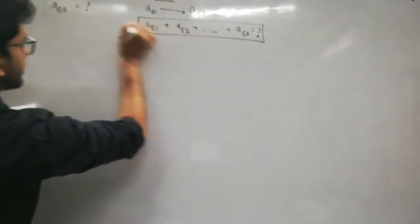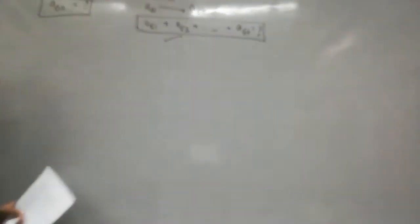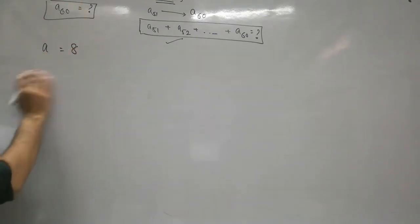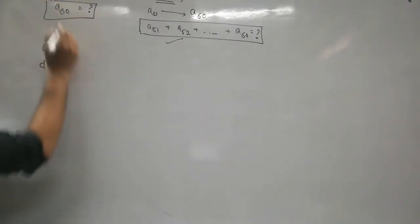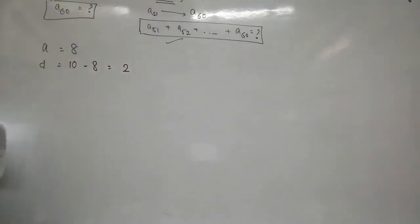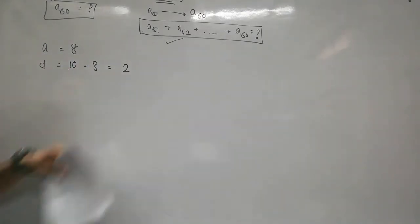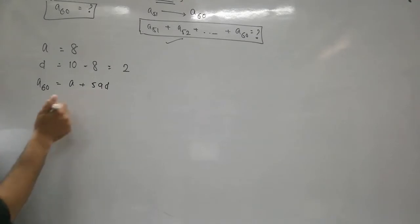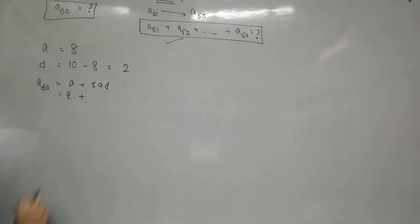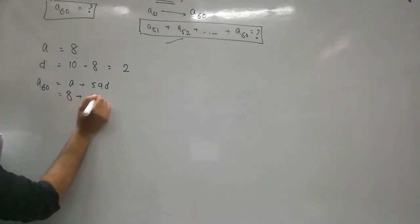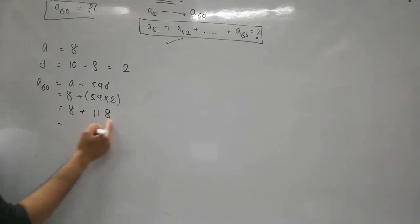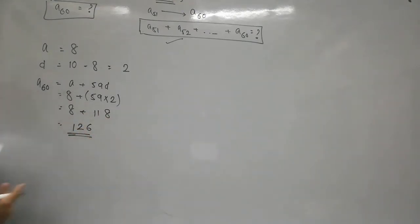So first we find A60. Given the AP, first term a = 8, common difference d = 10 − 8 = 2. A60 = a + 59d = 8 + 59×2 = 8 + 118 = 126. So the 60th term of the AP is 126.